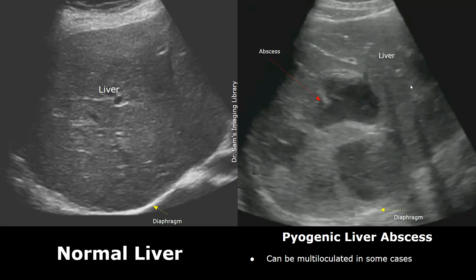Sometimes an abscess may be multi-loculated. Locules are compartments separated by thick walls. In this image, the abscess appears to have three compartments or locules separated by a thick wall.